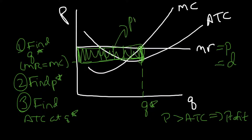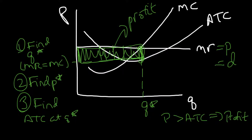And that is how you do it. You can try it yourself where the average total cost curve is above the price and go through the same steps: find Q* where MR equals MC, compare P* at that Q* to the average total cost at that Q*, and that's how you determine the profit or loss.